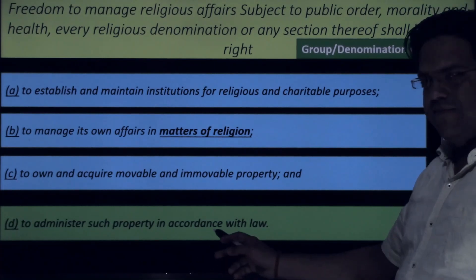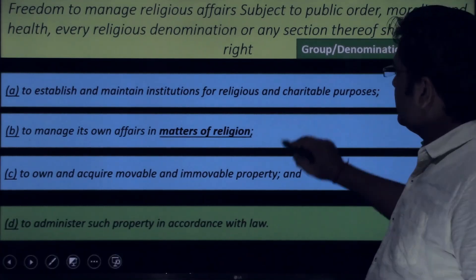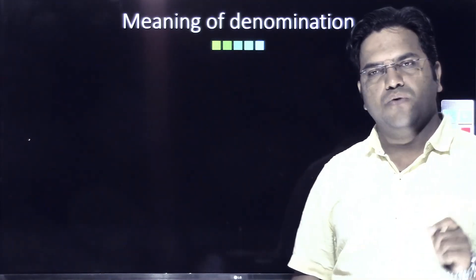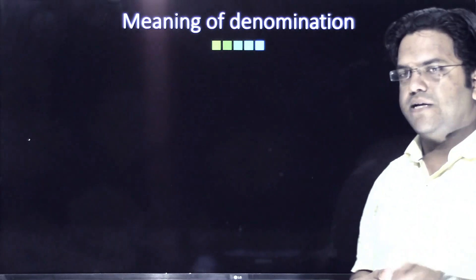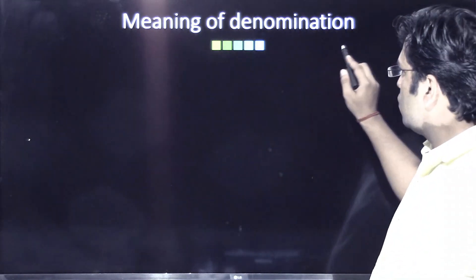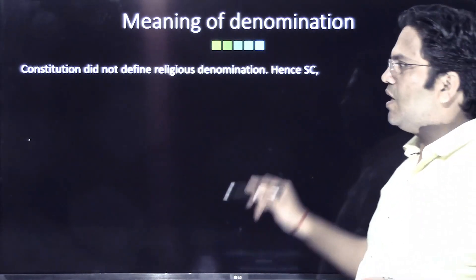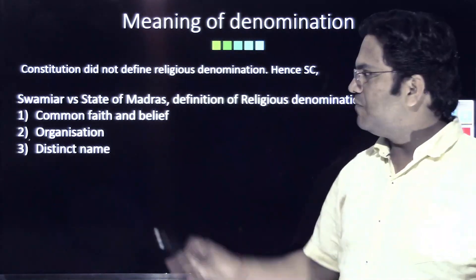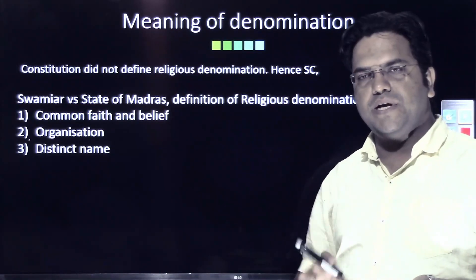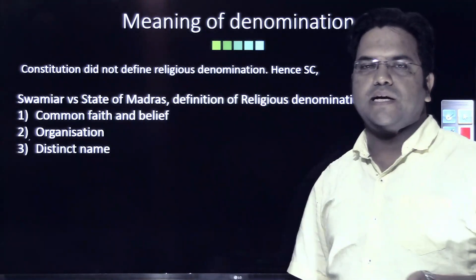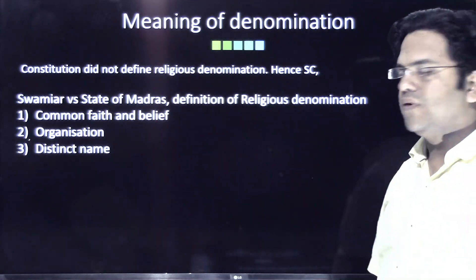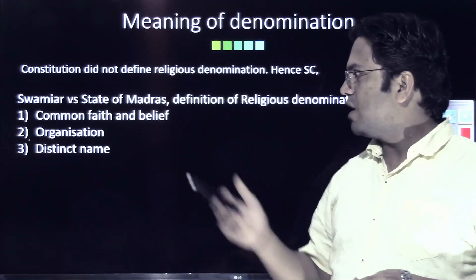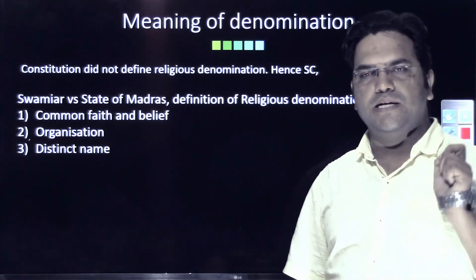Let us see the meaning of 'religious denomination,' because this word was never clarified in the Constitution, and so it was left to the Supreme Court. In Swamiyar versus State of Madras, the Supreme Court came up with three guidelines: if any group fulfills these three criteria, they can be conferred religious denomination status.